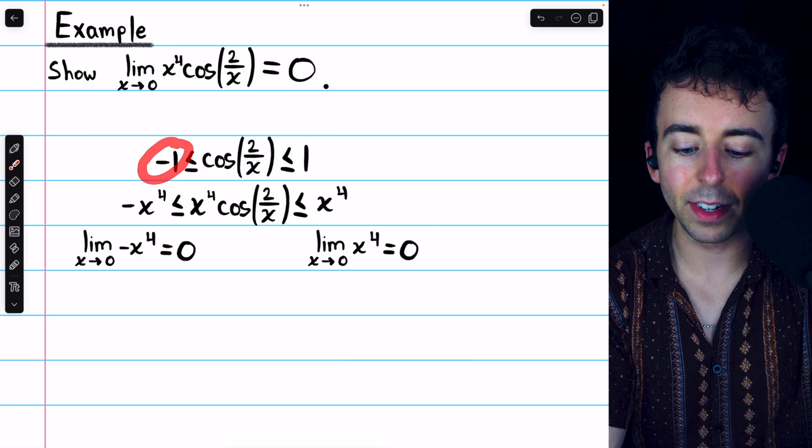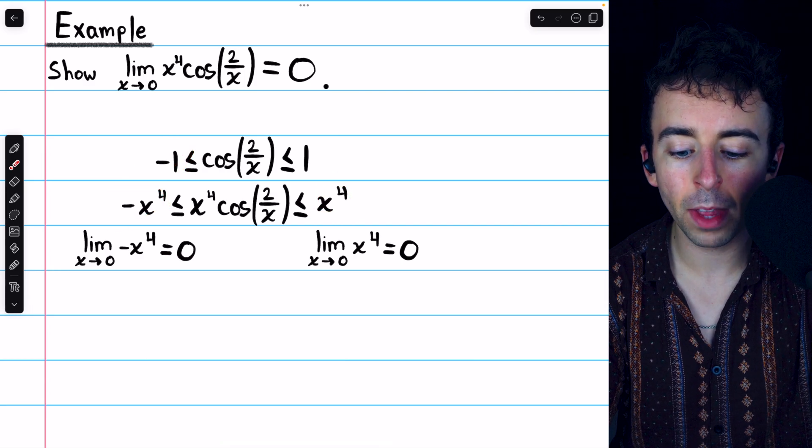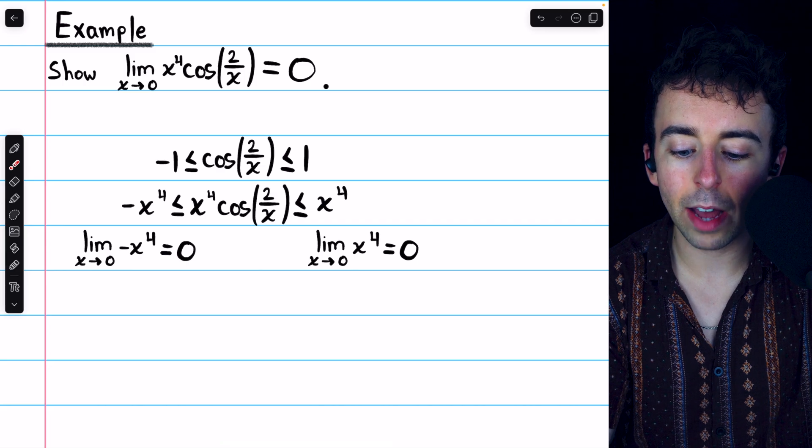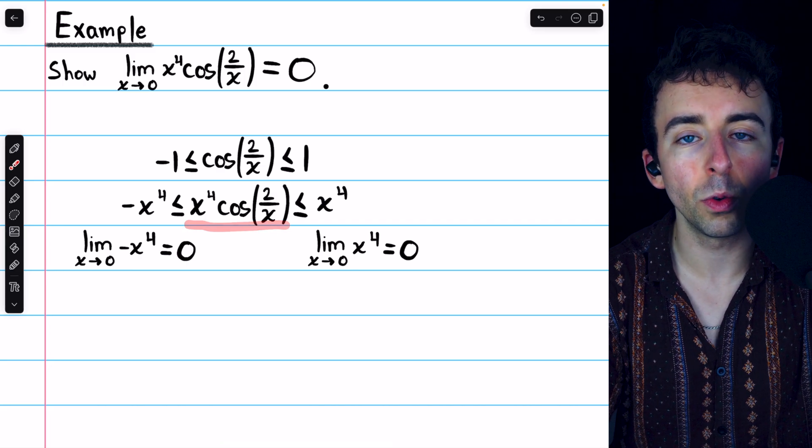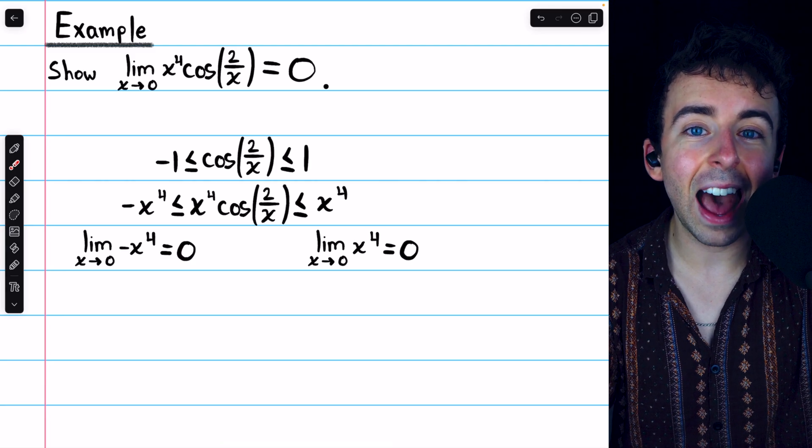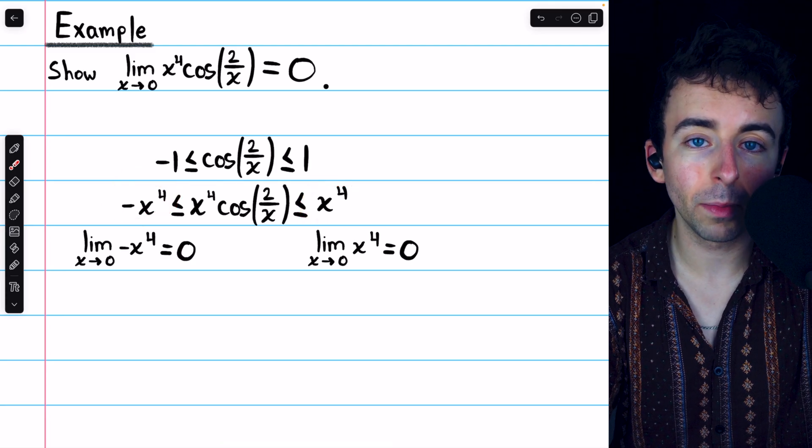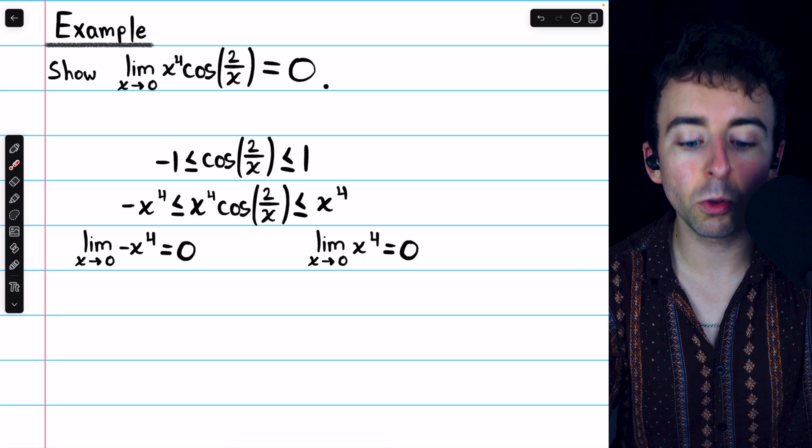To turn this into this, we simply multiply through by x to the power of 4. Thus, on the left we have -x⁴, on the right we have positive x⁴, and in the middle, as desired, we have x⁴ times cos(2/x). Now again, an important part of the squeeze theorem is having the limits of the bounding functions being equal, and of course they have to exist.